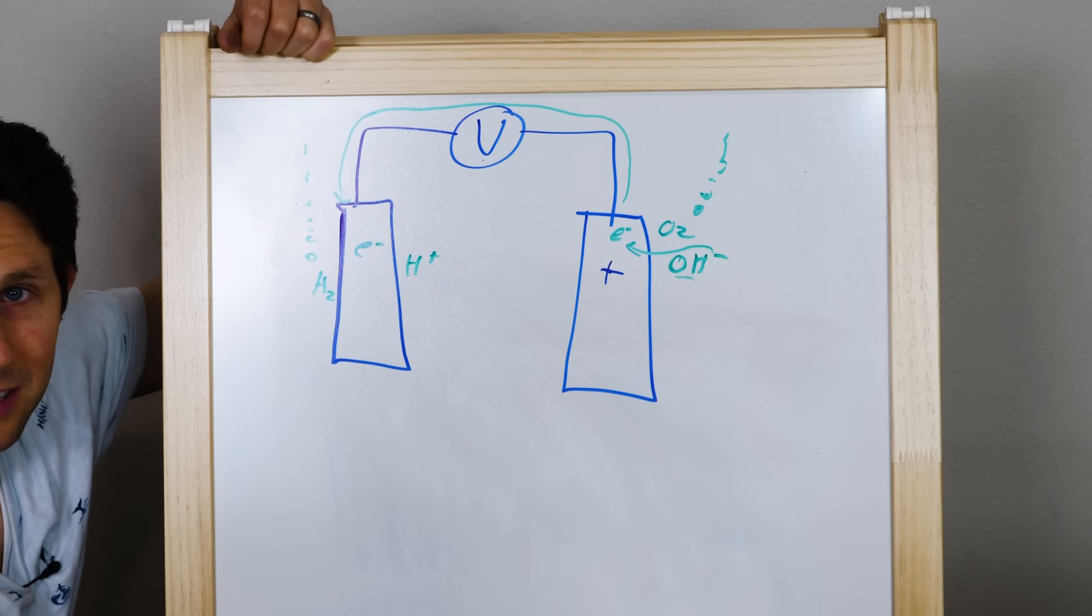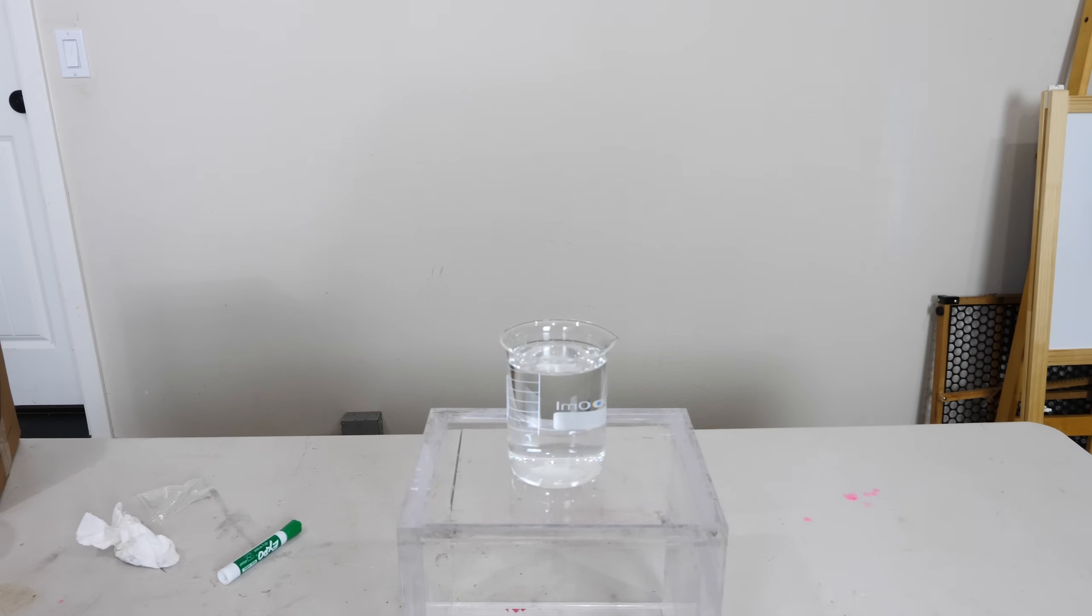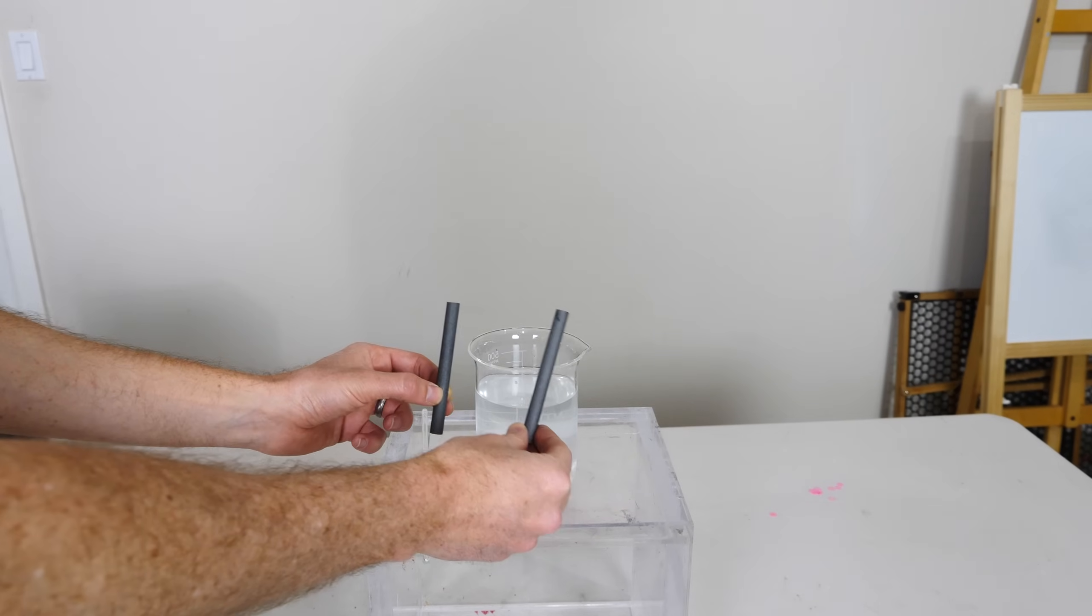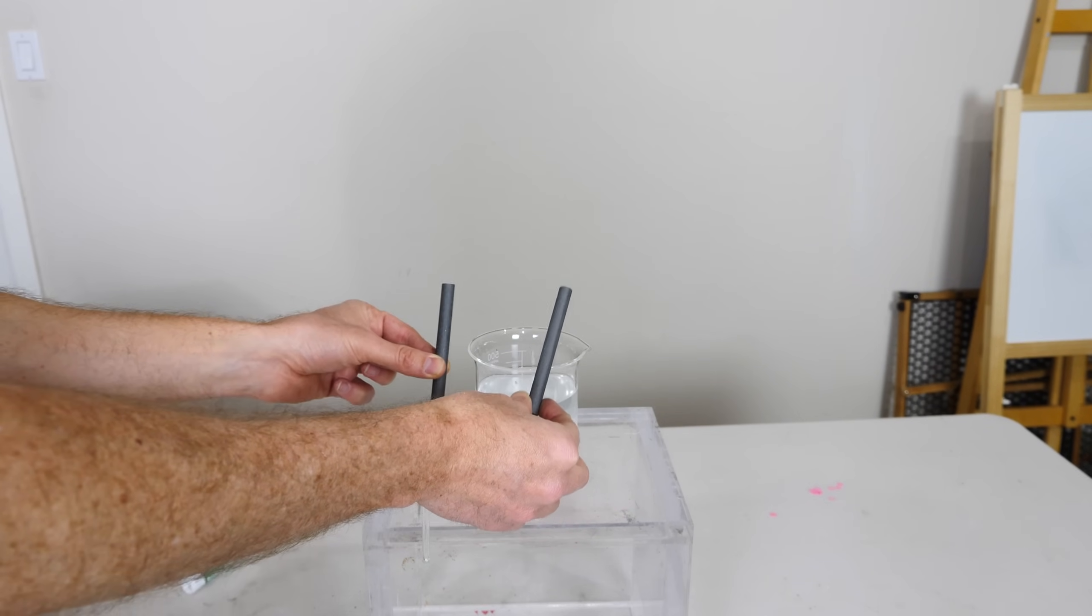So it takes work to physically move these electrons from one side to the other. I have to generate this voltage through work. Okay, so first I get my water and then I'll just add some salt to it. And then these are my graphite electrodes. Now let me show you what I'm going to hook these to.